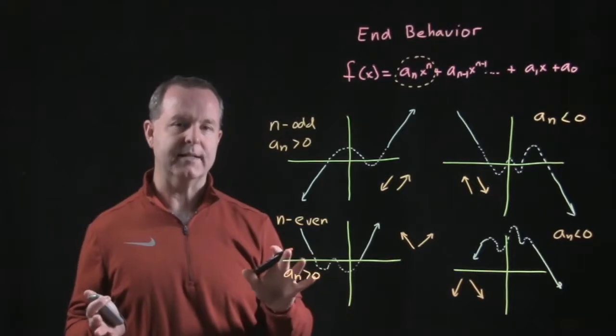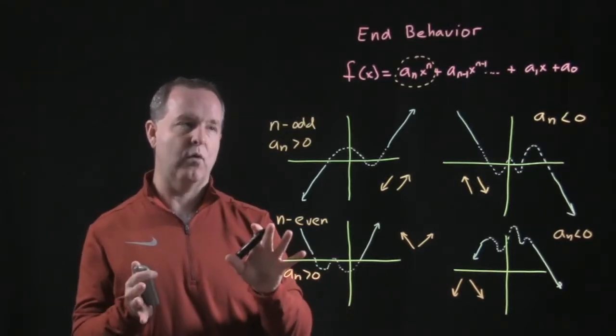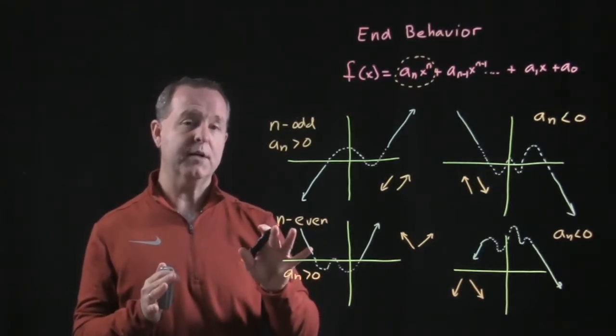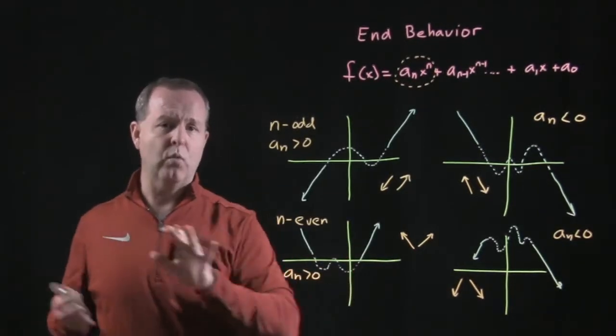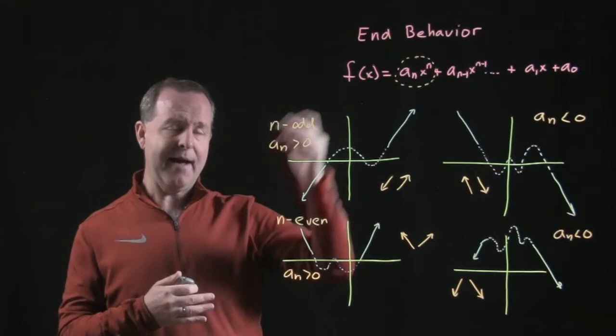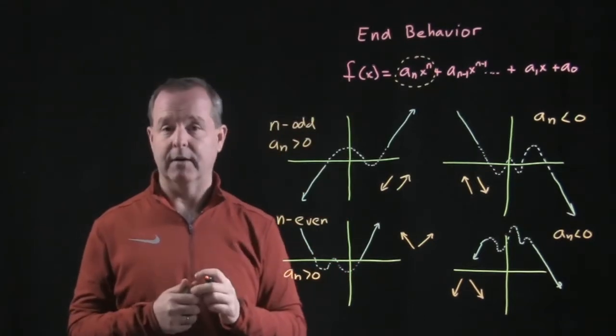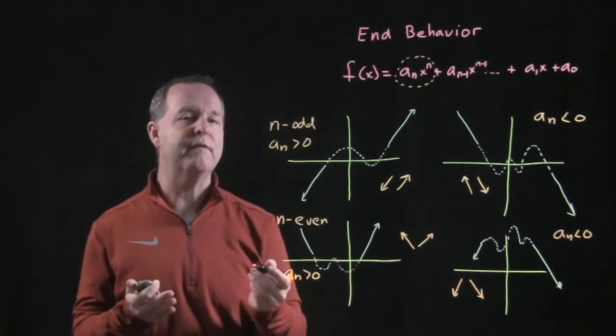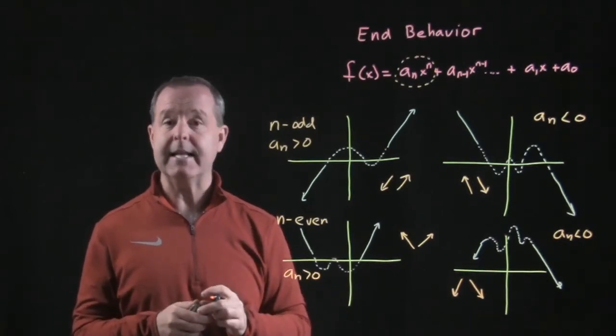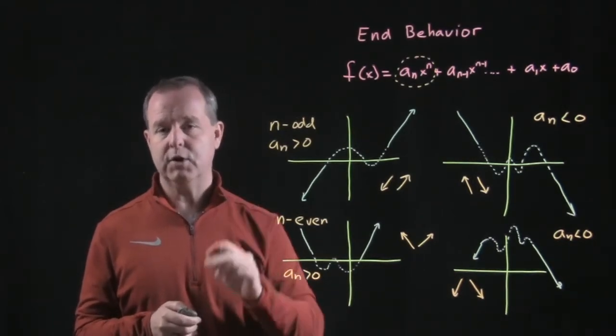So those are some ways that we want to start to look for when we look at polynomial functions. What's it doing way at the beginning of the graph and way at the end of the graph? The math words for that is its end behavior. And the way we can determine that is by looking at its leading coefficient and looking at its leading coefficient test. So let me show you an example.